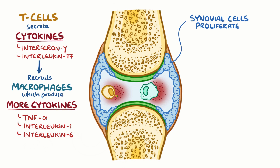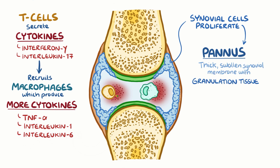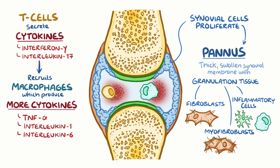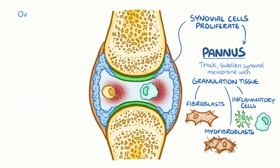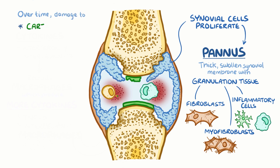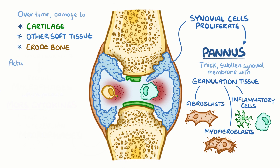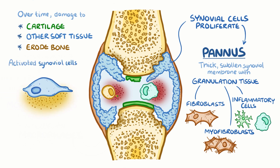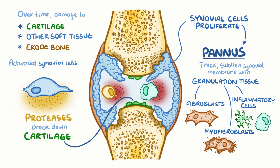The increase in synovial cells and immune cells creates a pannus, which is a thick swollen synovial membrane with granulation or scar tissue made up of fibroblasts, myofibroblasts and inflammatory cells. Over time, the pannus can damage the cartilage and other soft tissues and also erode bone. Activated synovial cells also secrete proteases, which break down the proteins in the articular cartilage. Without the protective cartilage, the underlying bones are exposed and can directly rub against each other.